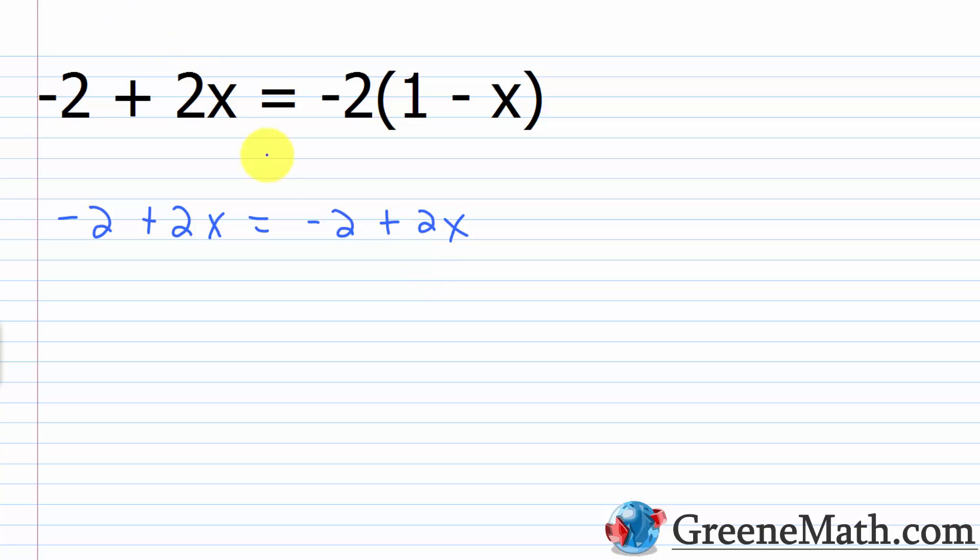So you'll notice that you have the exact same algebraic expression on each side of the equation. Two ways you can think about this. The first way is no matter what I plug in for x, it doesn't matter what value it is, I'm doing the same thing to it on each side. So I'm always going to get the same result, always going to be true for all real numbers, no matter what I do. The other way you can think about this is I could go through the process of solving it. And I could say, okay, well, I could subtract 2x away from each side.